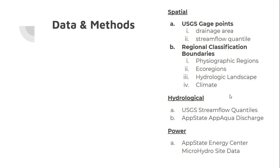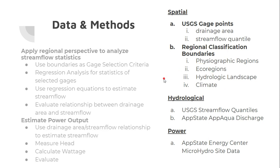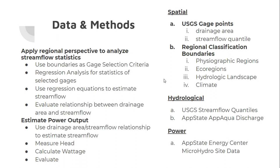I also use power output data from a micro hydro site visit that an Energy Center representative conducted. My methods use different regional boundaries to select different gauges, and then I perform a regression analysis between the stream flow statistics and drainage area for those gauges. I use those regression equations to estimate stream flow based on drainage area, then use the stream flow estimate alongside head — the difference in elevation — to calculate a wattage estimate, which I then evaluate against the power output data.